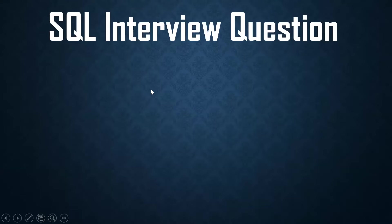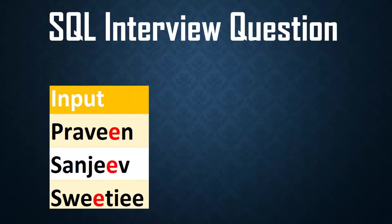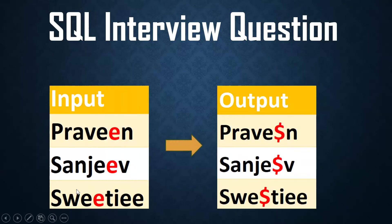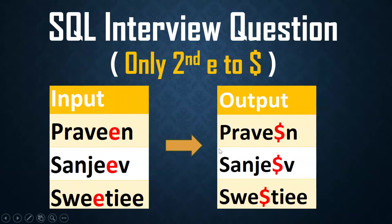Hello, welcome back to my channel Praveen Kumar. Today we'll see one SQL interview question. The input is 'praveen', 'sangee', 'sweetie'. The requirement is to get the second occurrence of 'e' replaced with a dollar sign. We are getting four e's in some strings, but we want only the second 'e' replaced with '$'.